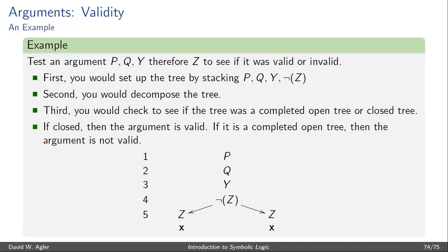then we would have a closed tree, and we could say that the argument is valid. If there were at least one completed open branch, then we'd know that there's an interpretation that would make it possible for the premises to be true and the conclusion false. So the argument would be invalid.